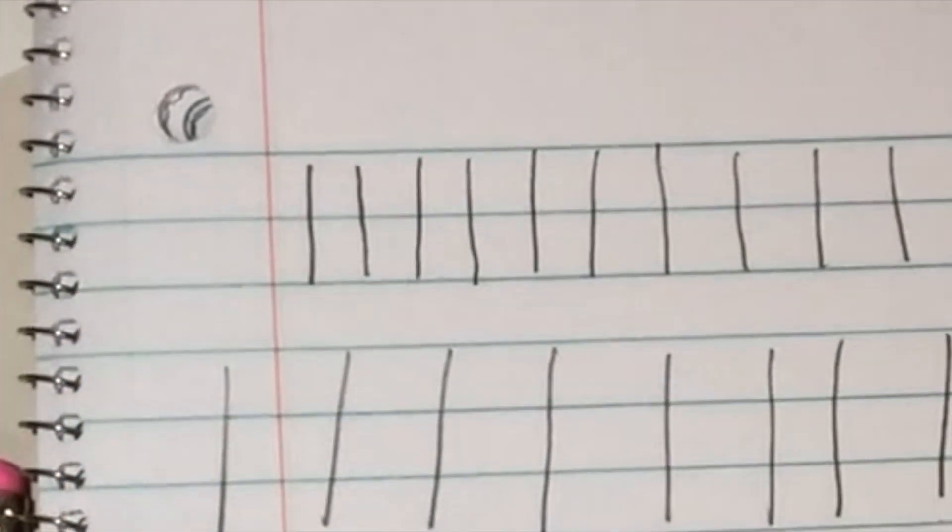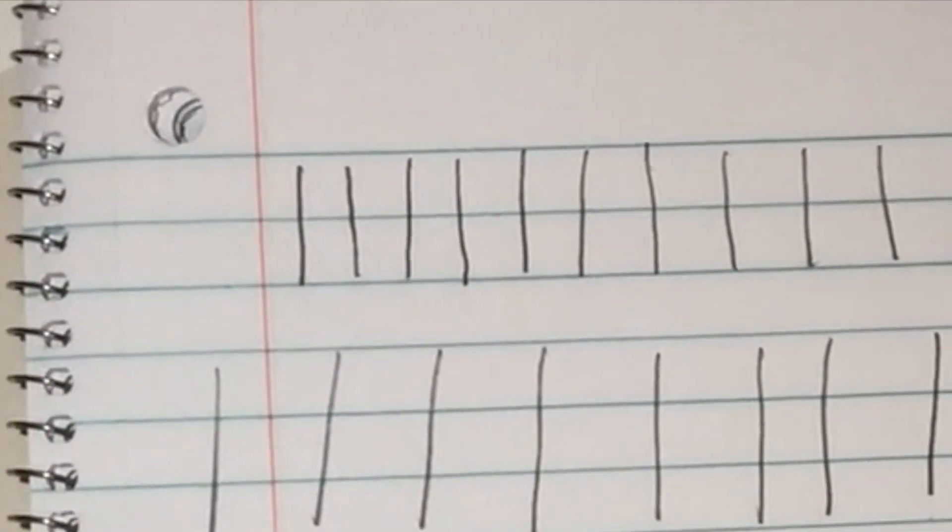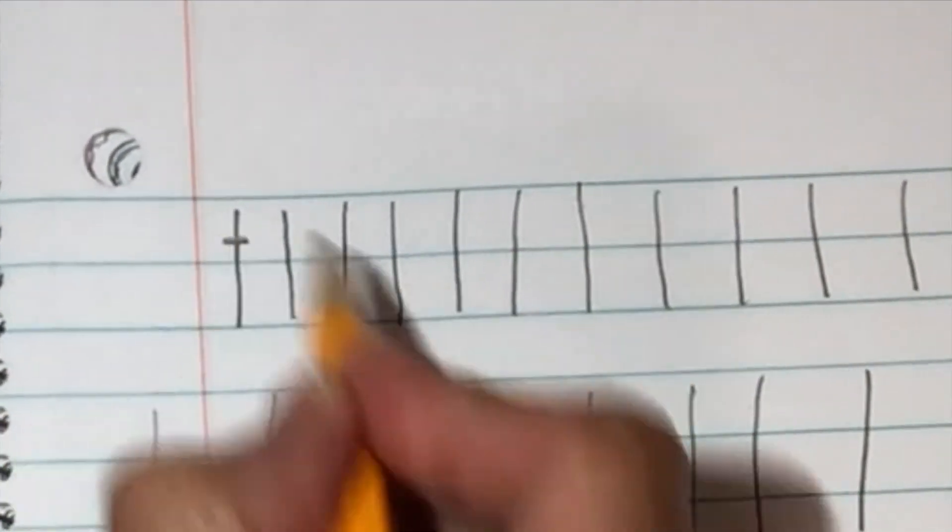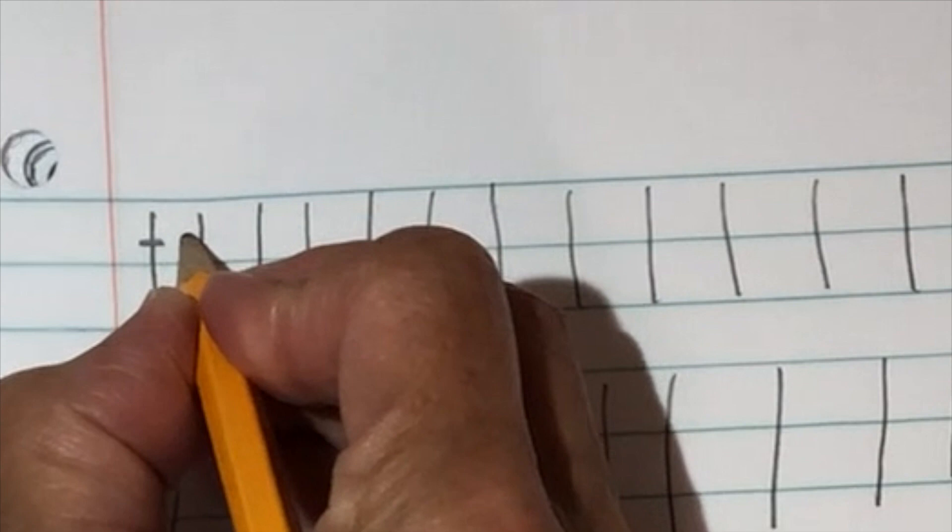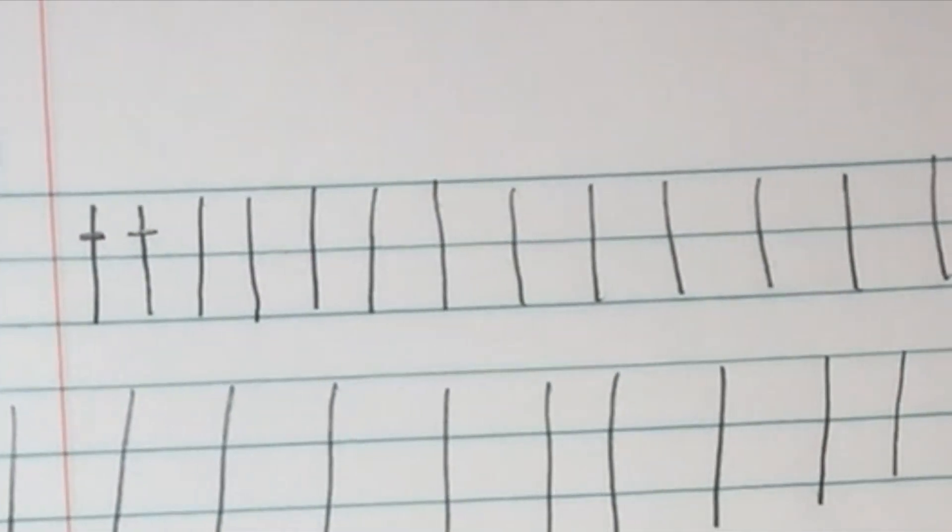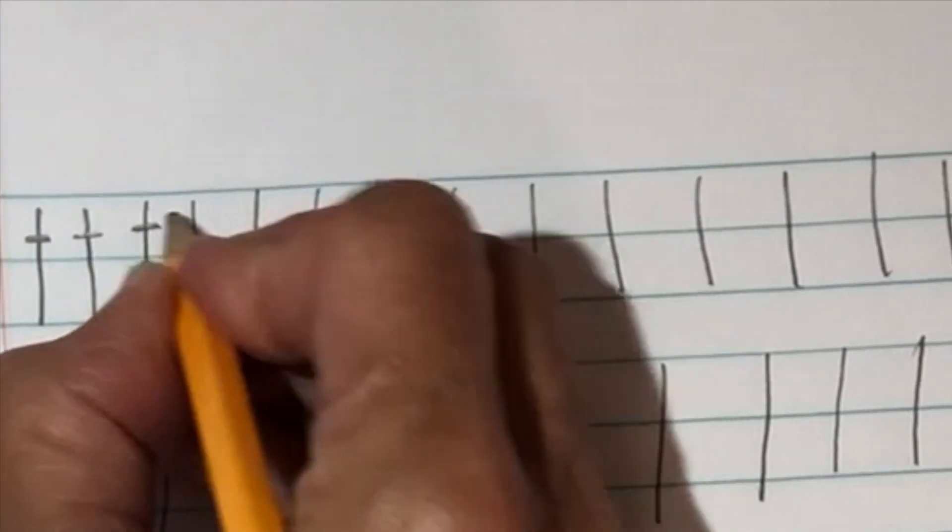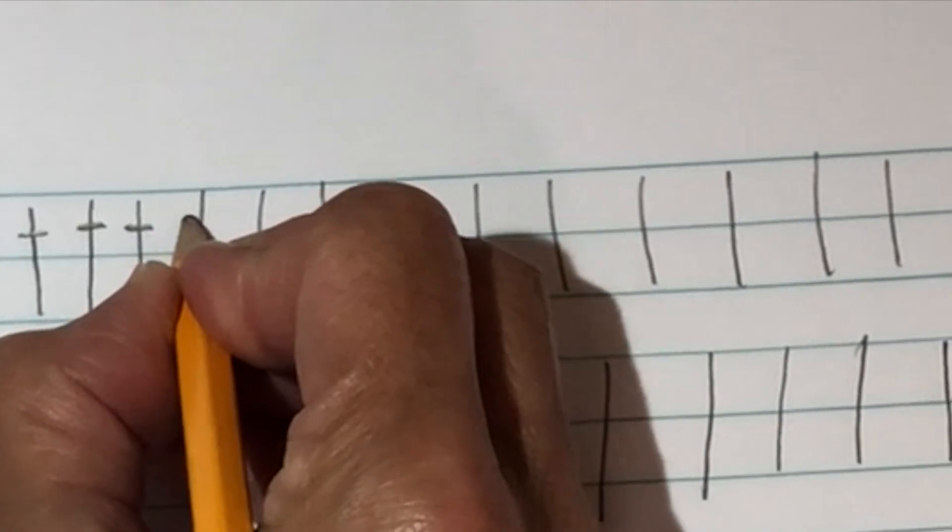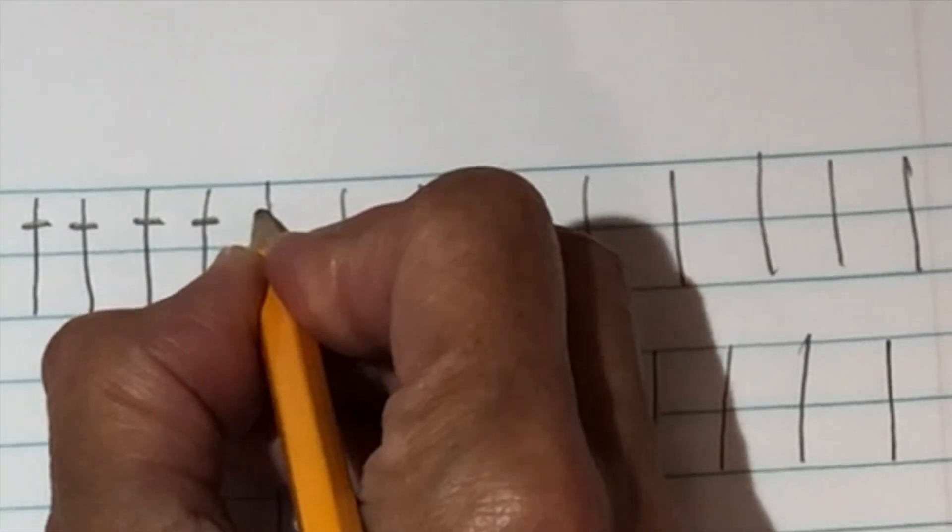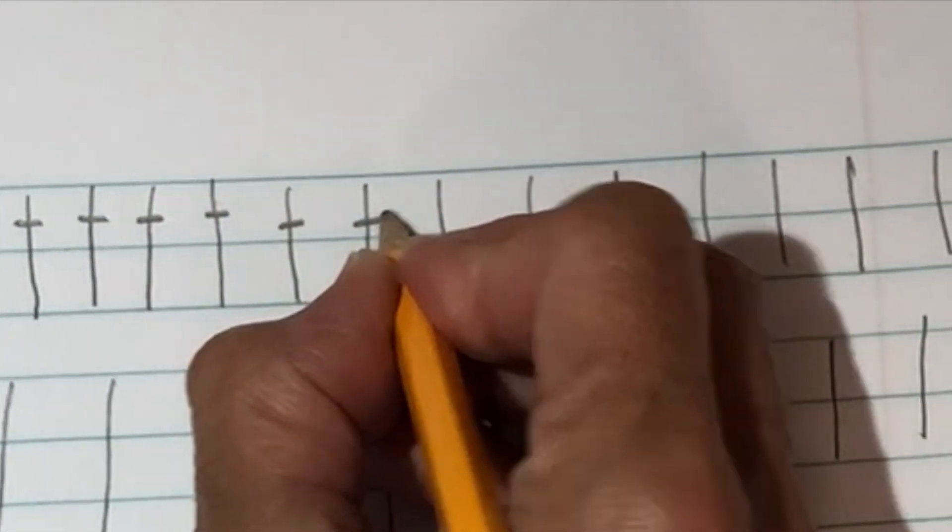Now we're gonna make the letter T on some of these lines. Does this look like the letter T? Yes, draw a little line like this on your line and that's the letter T. Okay, let's draw a bunch of T's.